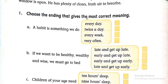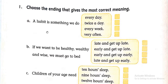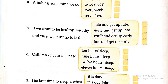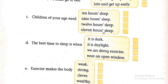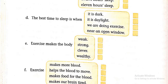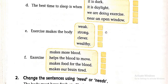Question number one: choose the ending that gives the most correct meaning. You have to choose the ending which has the most correct meaning. Before doing this exercise, please go through the chapter at least two to three times, then you will be able to do it easily.